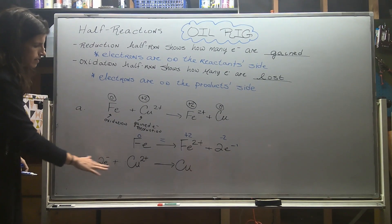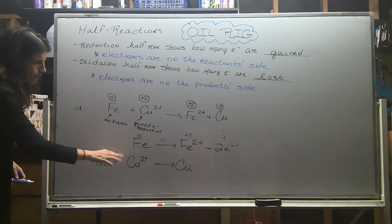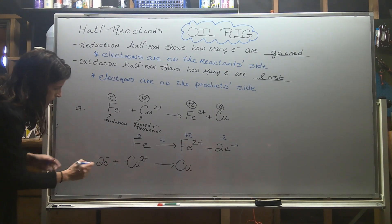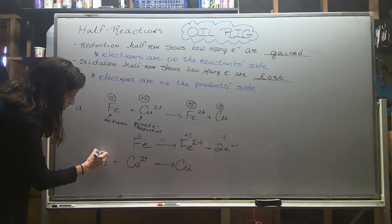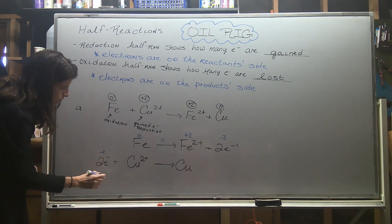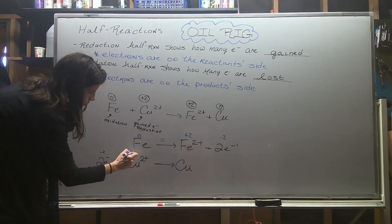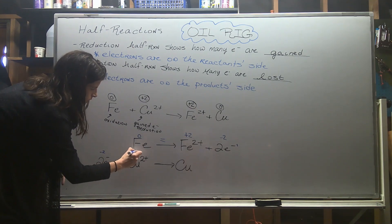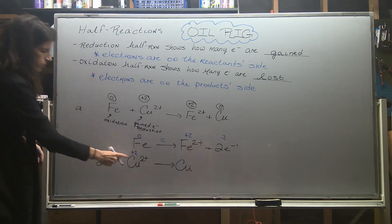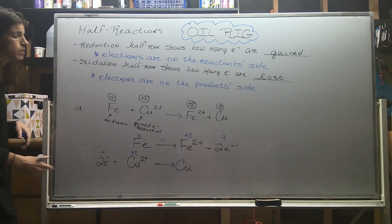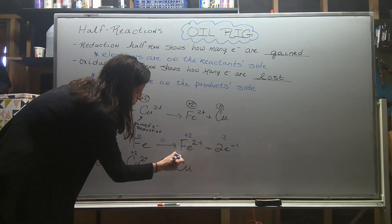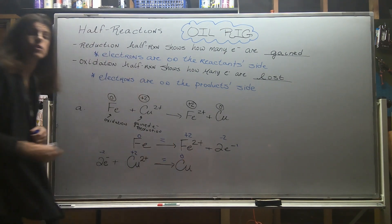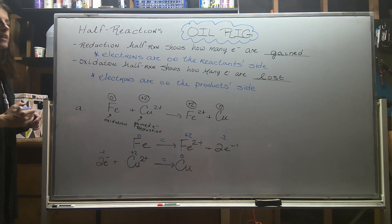We see the same dynamic with copper. Two times negative one gives negative two; we have a plus two on the reactant side, so those add up to zero — and we have a zero on the product side as well. The charge is balanced.